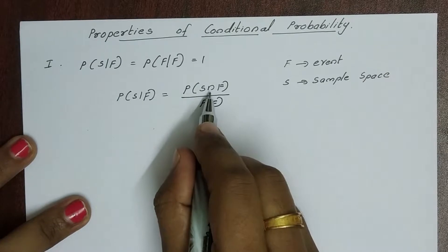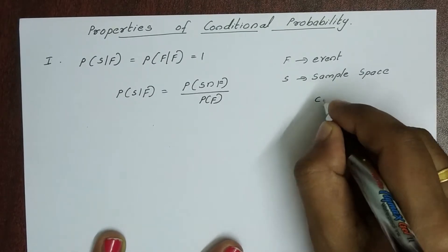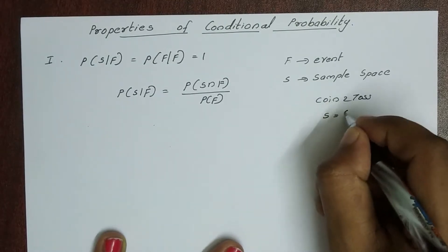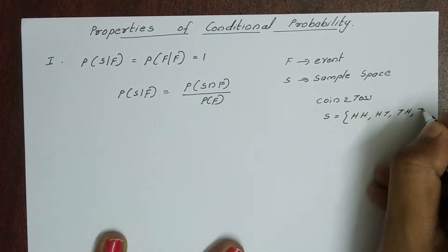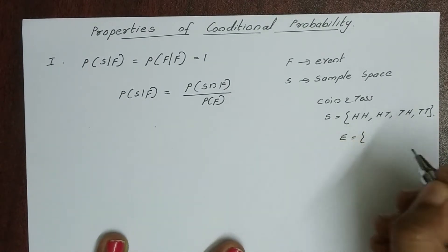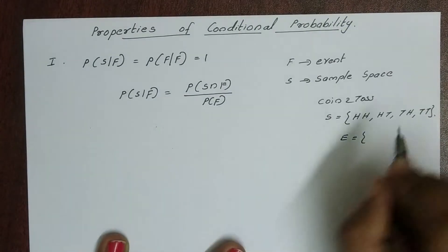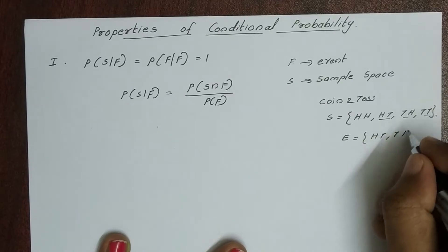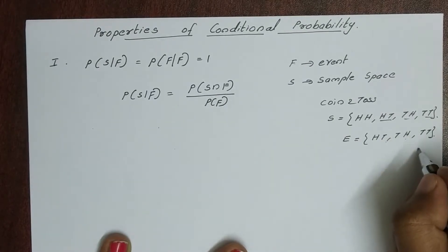Let me give you one example. We have a coin tossed two times. The sample space elements are: head-head, head-tail, tail-head, tail-tail. Now, tail appears at least once — so tail appears as one of the top outcomes in three of these elements.